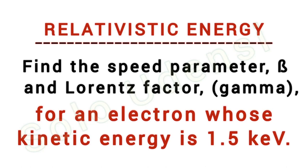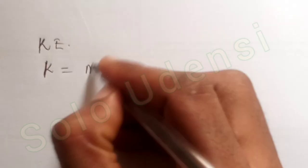Find the speed parameter beta and Lorentz factor gamma for an electron whose kinetic energy is 1.5 kilo electron volts. The kinetic energy of a particle K is given by M₀c²(γ - 1).